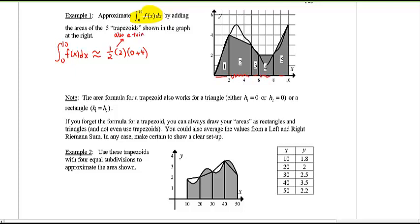Now notice this is actually also a triangle, right? It's like base times height, right? Two times four, the height divided by two. So in this case, yeah, trapezoid, triangle, you can say triangle is a special type of trapezoid.